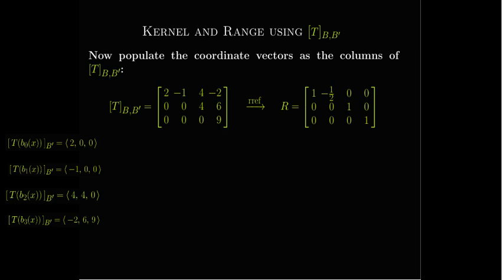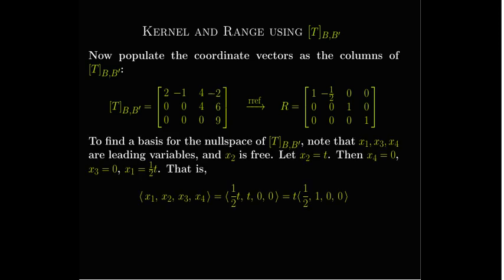We place those coordinate vectors as columns of our matrix: columns (2,0,0), (−1,0,0), (4,4,0), (−2,6,9). We transform that to reduced row echelon form. From the RREF, we can see there is one free variable — the second column is free. We can read off the null space basis vector as (1/2, 1, 0, 0).